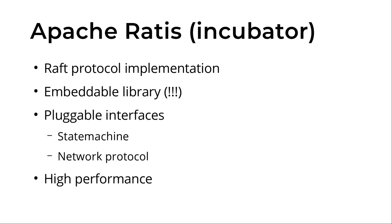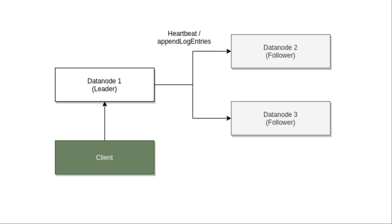Here is the overall picture: a client connects to the data node. First, the client connects to the Storage Container Manager or the Ozone Manager, and from there it receives information about which data node to connect to. The client then connects to that data node using the standard gRPC protocol. Between one data node and another, there is this Raft protocol implementation.